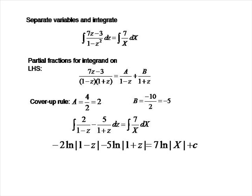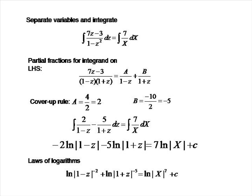Integrating the left-hand side, the first term gives minus 2 times the natural logarithm of |1 minus Z|. The minus sign arises because the derivative of 1 minus Z introduces a minus sign via substitution. So we have minus 2 ln|1 minus Z| minus 5 ln|1 plus Z| equals 7 ln|X| plus a constant of integration C. We now apply the laws of logarithms, bringing the constants up as powers.